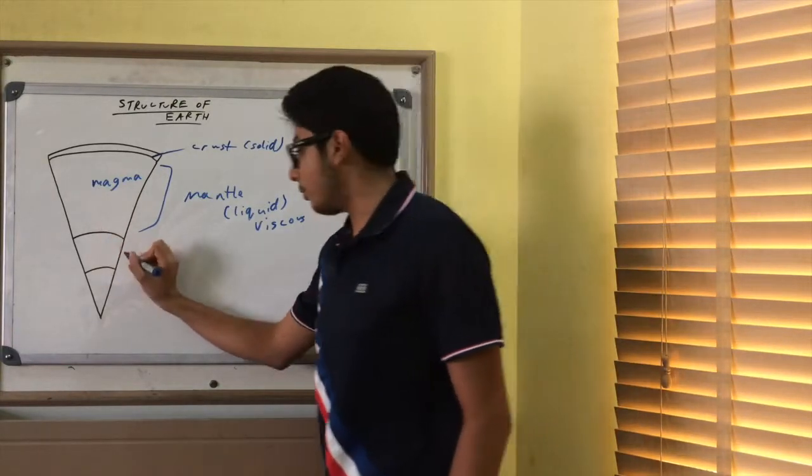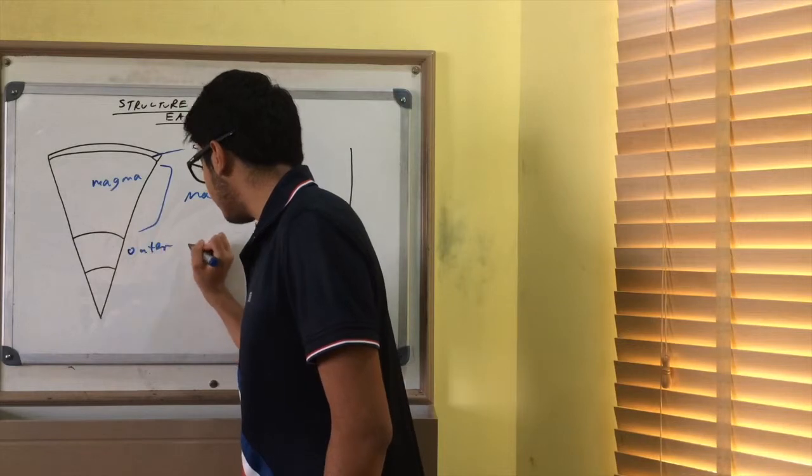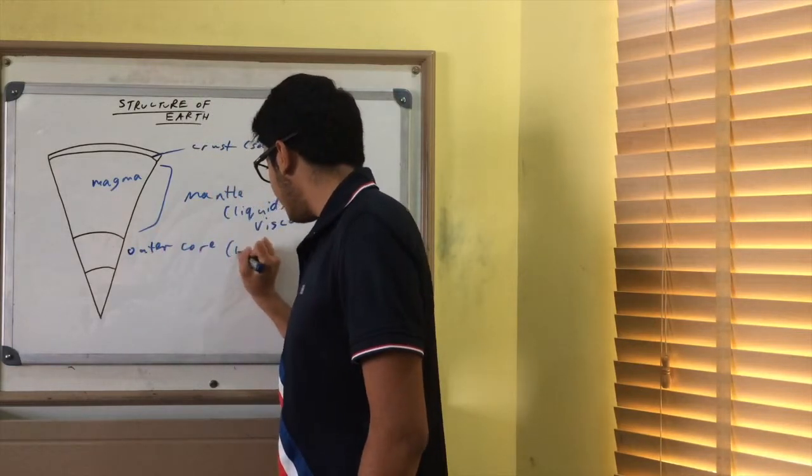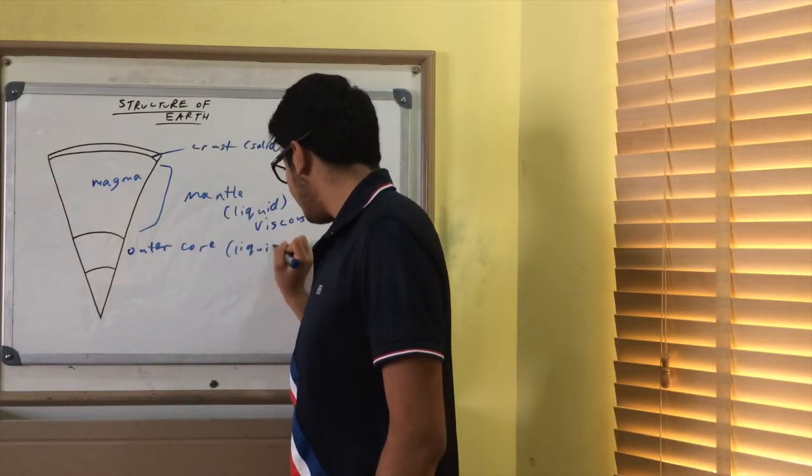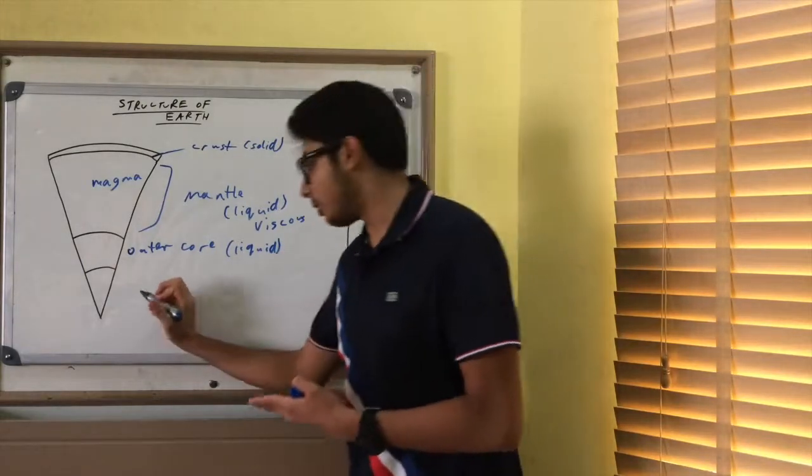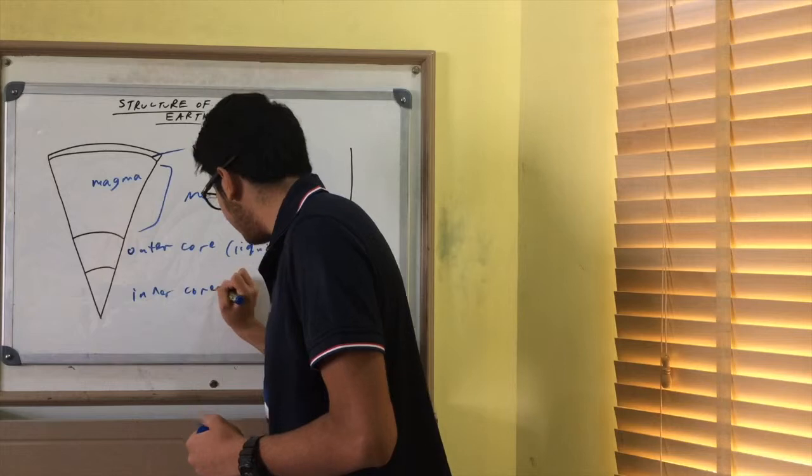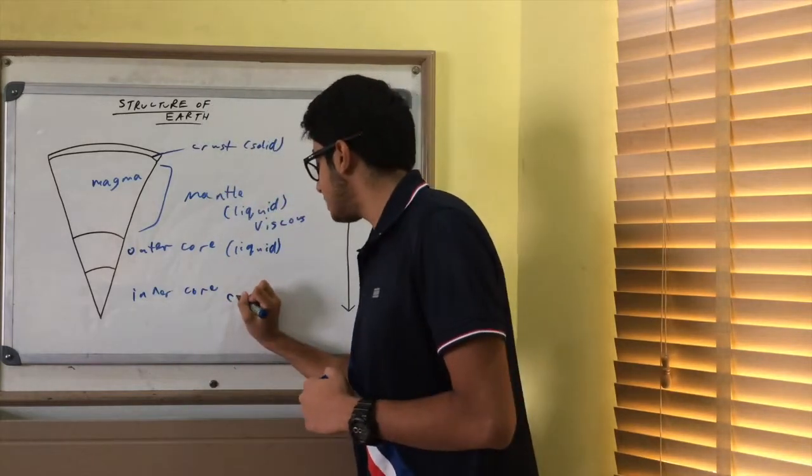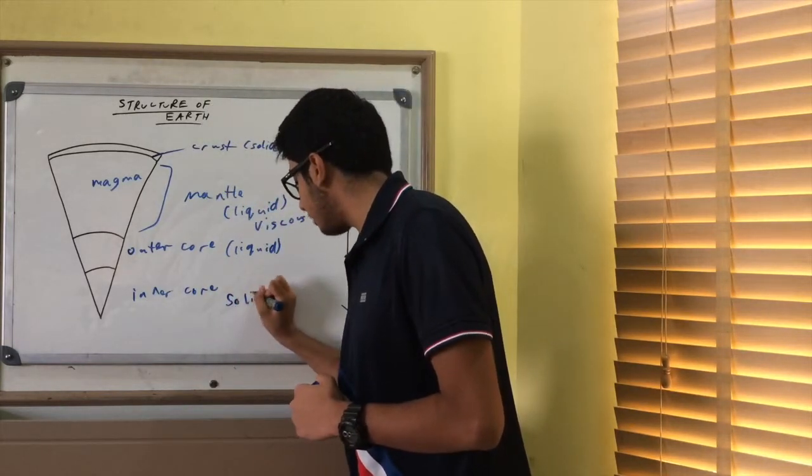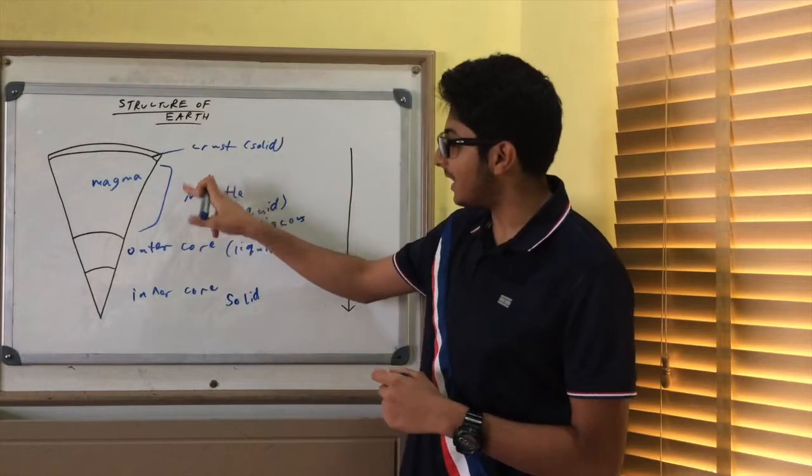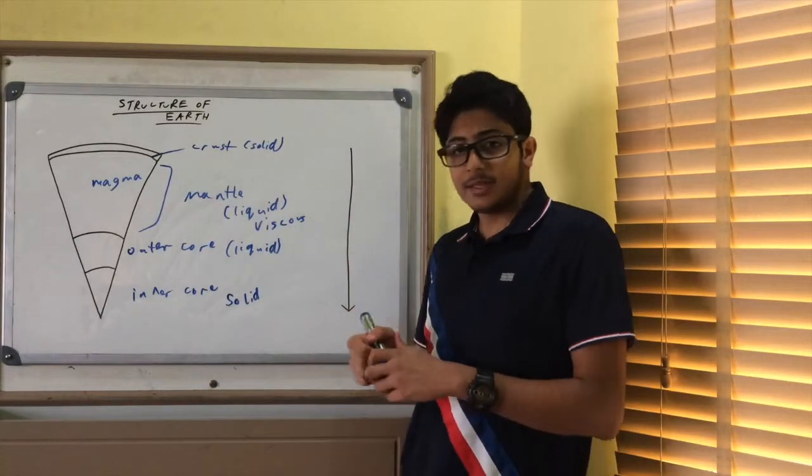Then we have our outer core, and our outer core is still a liquid. Then we have our inner core. Now our inner core is special because it's not liquid, it's solid. Why is our inner core solid? Why do we go from solid to liquid to liquid to solid? That doesn't make sense.